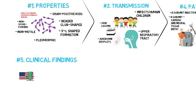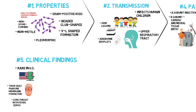Clinical findings. Diphtheria is rare in the United States. Its most prominent sign is a thick gray membrane over the tonsils and throat. Other signs are fever, sore throat, and cervical lymphadenopathy.